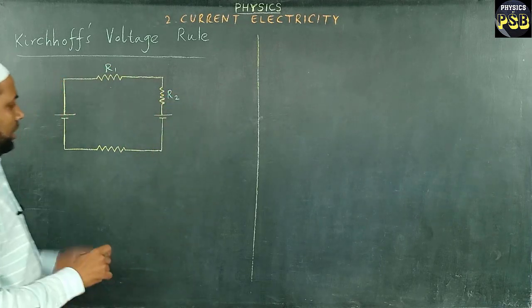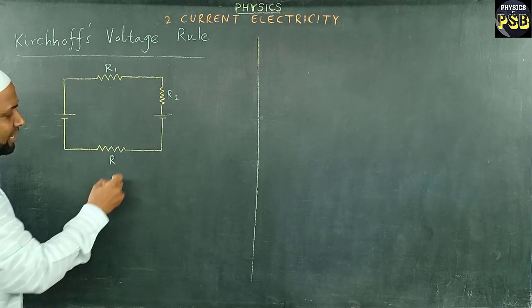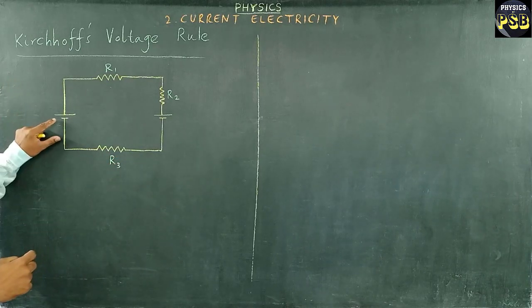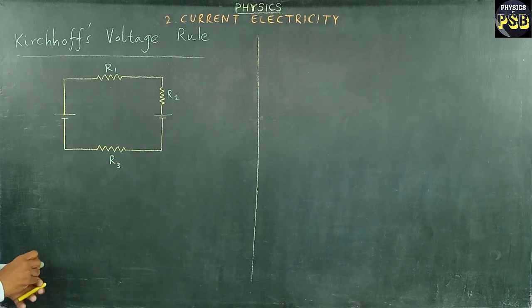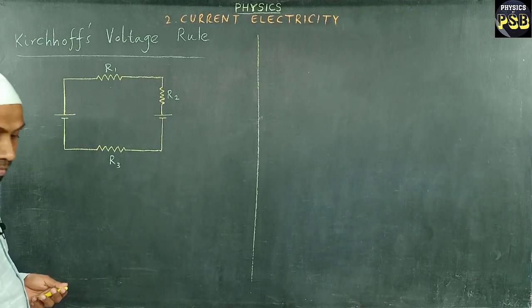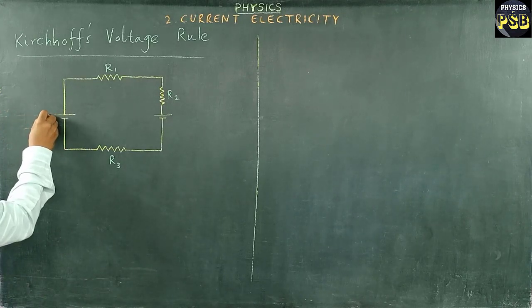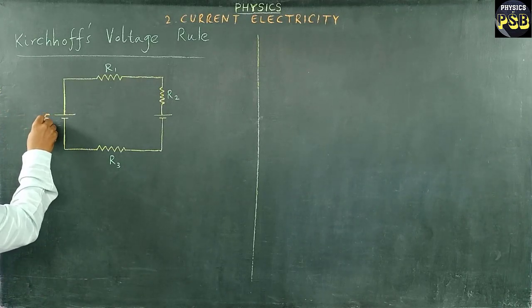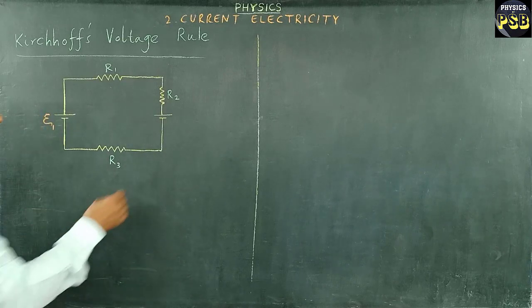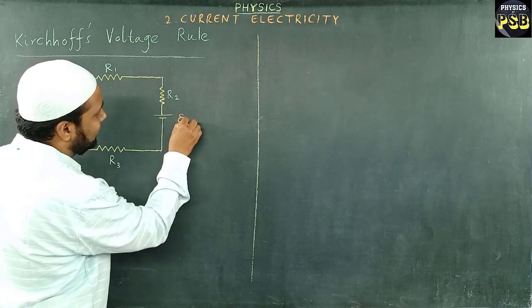Now here, this cell is said to have EMF Xi1, and this has EMF represented by the letter Xi2.